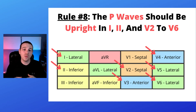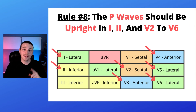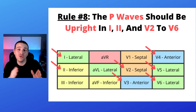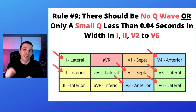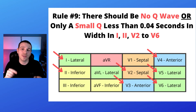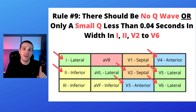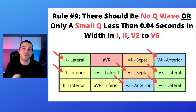Rule number eight: the P wave should be upright in leads one, two, and V2 through V6. Rule number nine: there should be no Q waves, or only a small Q wave with a width of 0.04 seconds or less, in leads one, two, and V2 through V6.